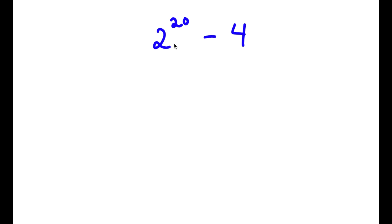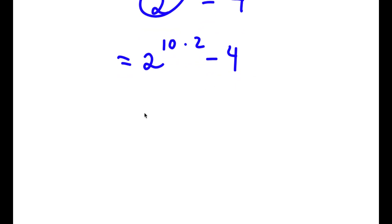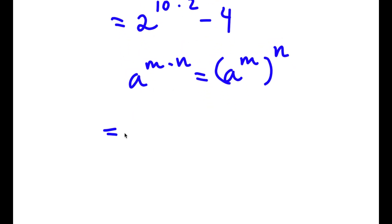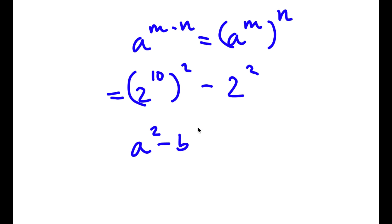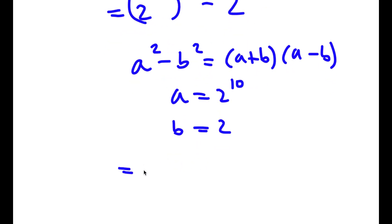In this problem, I have 2 to the power of 20 minus 4. I'm going to rewrite 2 to the power of 20 as 2 to the power of 10 times 2. Using the rule that a to the power of m times n equals a to the power of m to the power of n, this becomes 2 to the power of 10, squared, minus 4. And 4 I can rewrite as 2 squared. Now using the difference of squares formula — a squared minus b squared equals (a+b)(a-b) — where a is 2 to the power of 10 and b is 2, I get 2 to the power of 10 plus 2 times 2 to the power of 10 minus 2.